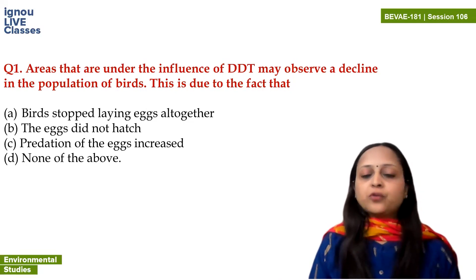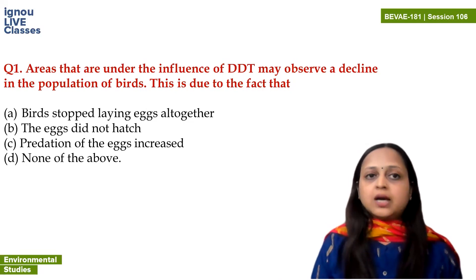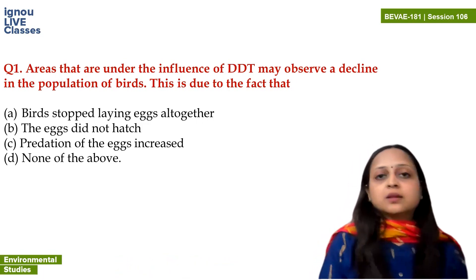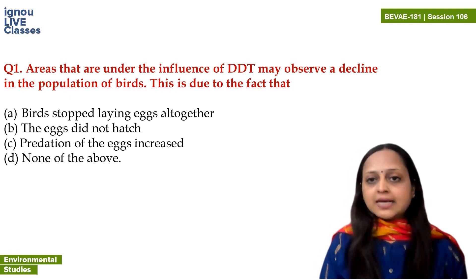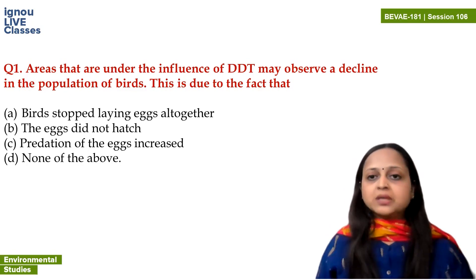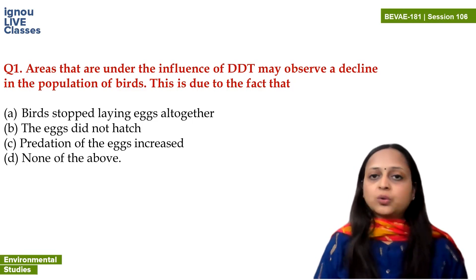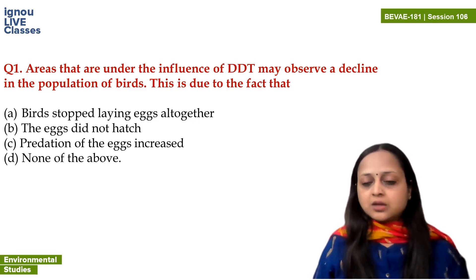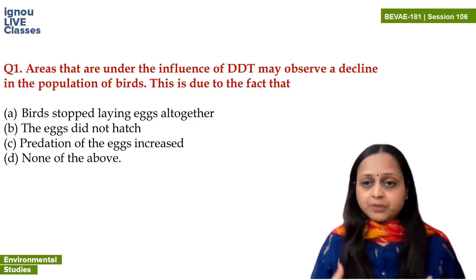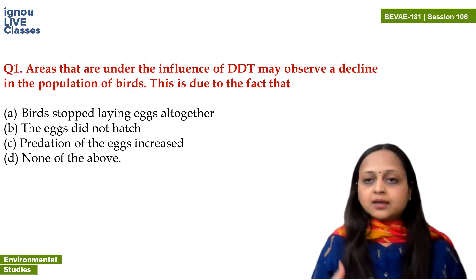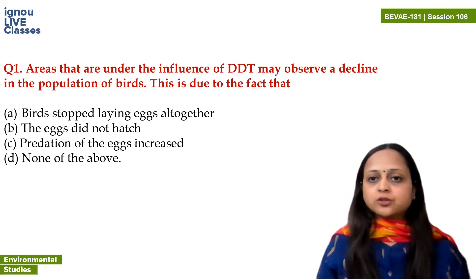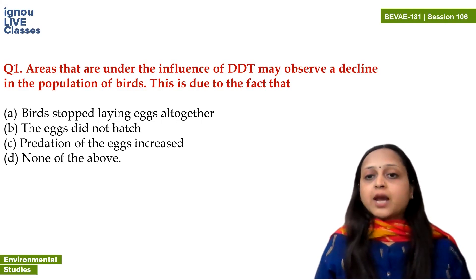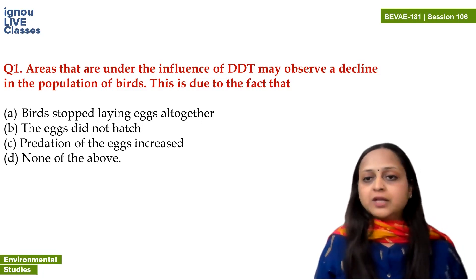Areas that are under the influence of DDT may observe a decline in the population of birds. This is due to the fact that DDT is an insecticide — its full name is dichlorodiphenyl trichloroethane. DDT is not metabolized when we are exposed to it. In fact, its capability is to biomagnify — this is called bioaccumulation and biomagnification.